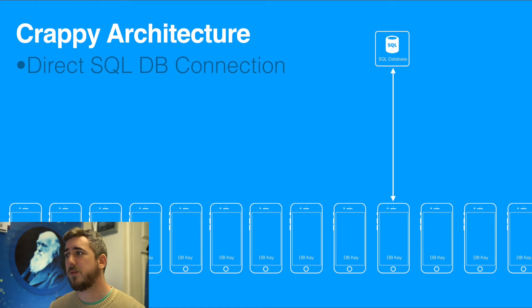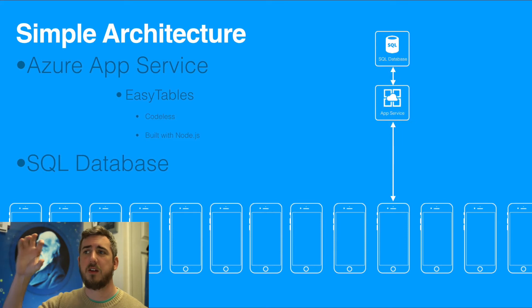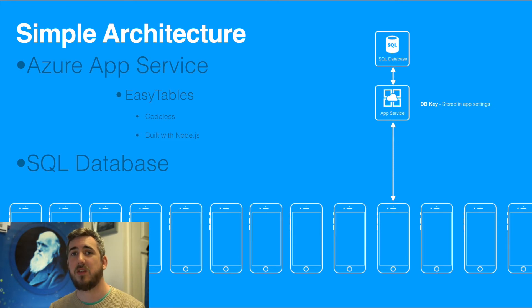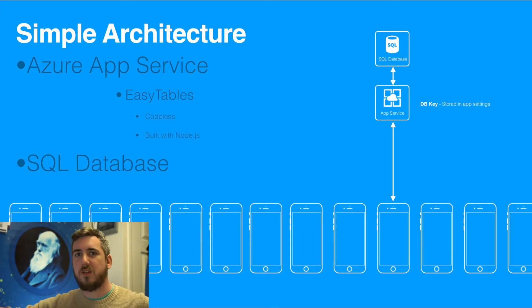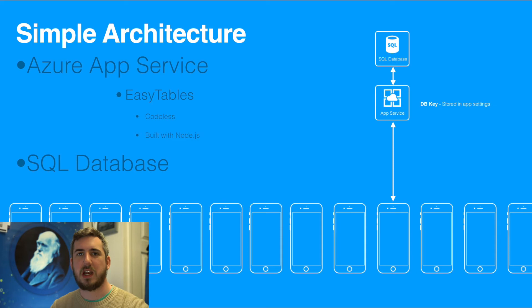What we can do to improve this is add middleware — an App Service that sits between our SQL database and the client. This means we can move the database key off device and into the cloud, stored in App Service. We have this orchestrator — our App Service — which can deal with calling off to all the different services within Azure or third parties. It also allows us to authenticate that the people interacting with this service are actually who we want. We're not just leaving the front door open or giving everyone the keys to the house.